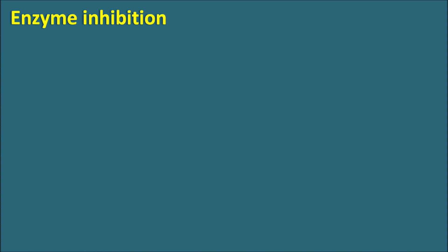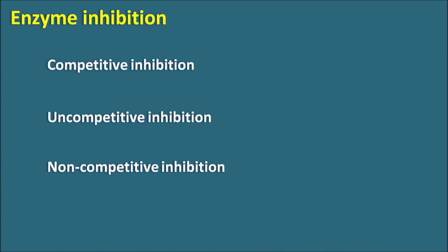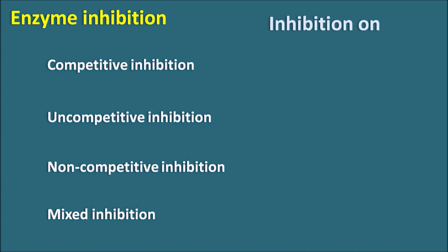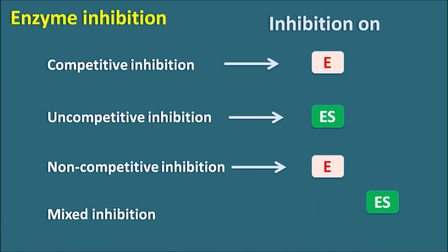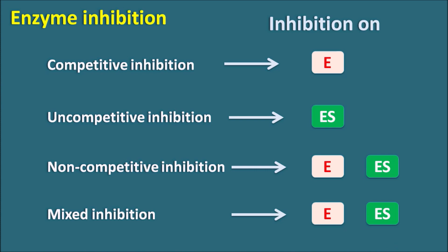Based on this, let us see the enzyme inhibitions classified into four categories: competitive inhibition, uncompetitive inhibition, non-competitive inhibition, and mixed inhibition. They can also be classified based on how the inhibitor interacts with the enzyme-substrate complex. In competitive inhibition, the inhibitor only acts on the free enzyme. In uncompetitive inhibition, the inhibitor acts on the enzyme-substrate complex. In non-competitive inhibition, the inhibitor can act on both the free enzyme and the enzyme-substrate complex. In mixed inhibition, which is one type of non-competitive inhibition, inhibition occurs on both enzyme and enzyme-substrate complex.